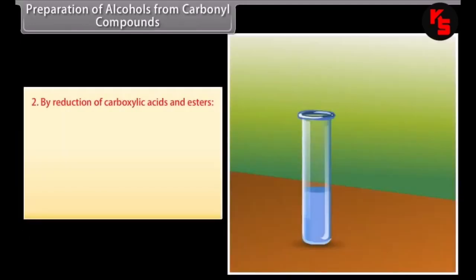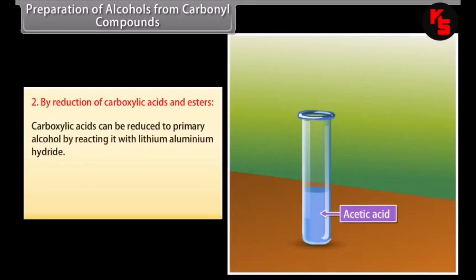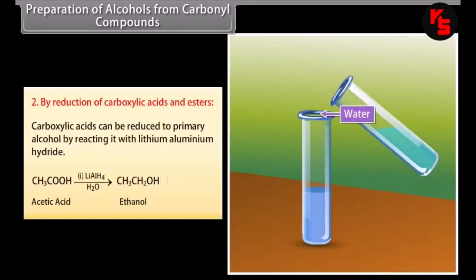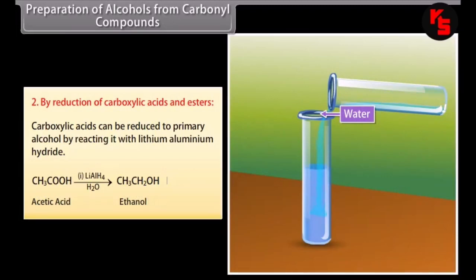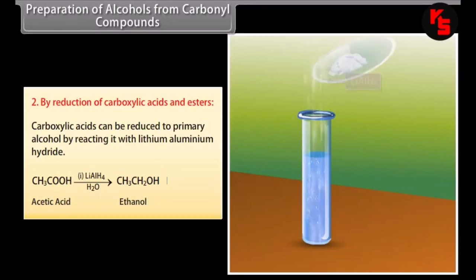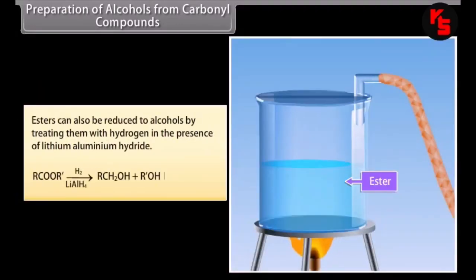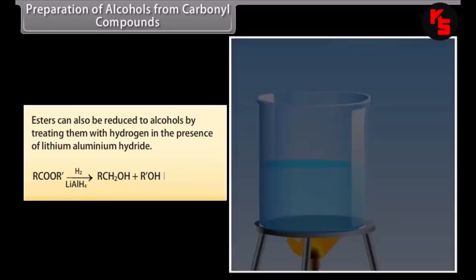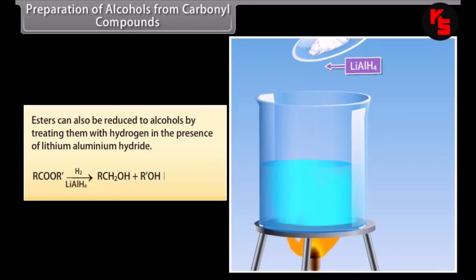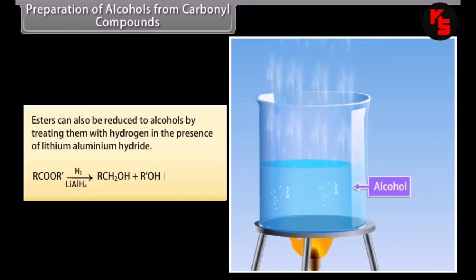By reduction of carboxylic acids and esters: carboxylic acids can be reduced to primary alcohols by reacting with lithium aluminium hydride. Lithium aluminium hydride reacts with acetic acid along with water to form ethanol. Esters can also be reduced to alcohols by treating them with lithium aluminium hydride.